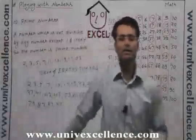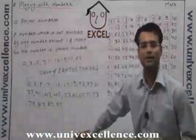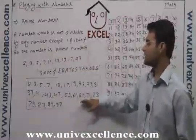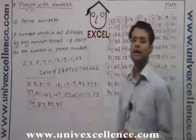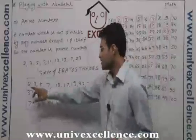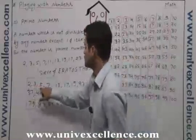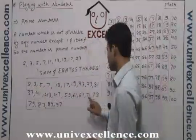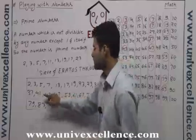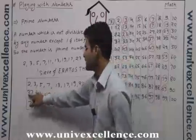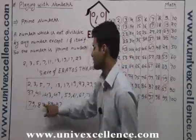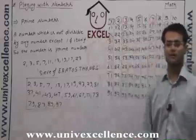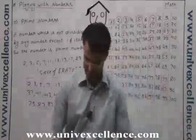These are the prime numbers between 1 to 100 — it means these are the numbers which cannot be divisible by any number. Counting them: 1, 2, 3, 4, 5, 6, 7, 8, 9, 10, 11, 12, 13, 14, 15, 16, 17, 18, 19, 20, 21, 22, 23. So there are 23 prime numbers between 1 to 100.